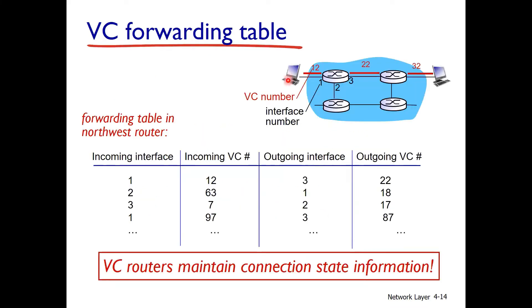For example, consider a source A to destination D within a virtual circuit network. A path is allocated — a set of three links — and the VC numbers identify each link along the path. Looking at the forwarding table for a northwest router, the incoming interface and incoming VC number 12 maps to outgoing interface 3 and outgoing VC number 22.